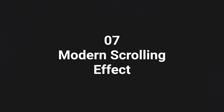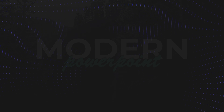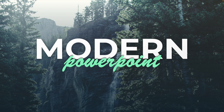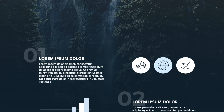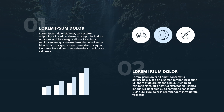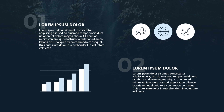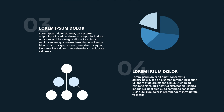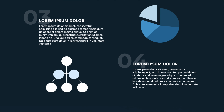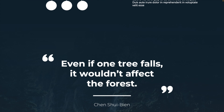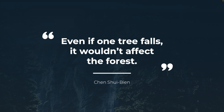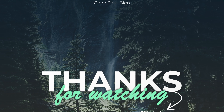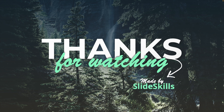Moving on to number 7, we have this modern PowerPoint using a scrolling effect with an image in the background that continues throughout the presentation and fades to blue. But if you move downwards in the presentation, it kind of reappears all the way to the ending slide. It has this website look and feel to it, and I'm pretty happy with how the result turned out.